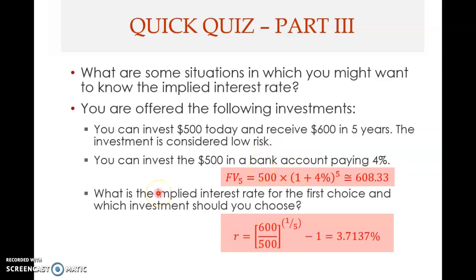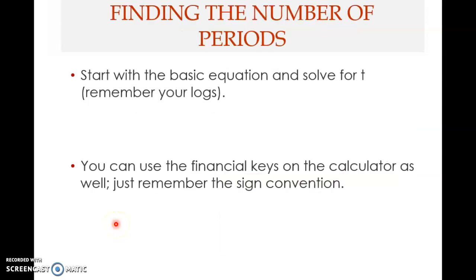That's how you solve this. We've finished the third part of the chapter. We now move on to the fourth part: when the number of periods is not known. All other factors are known, but the term is unknown.